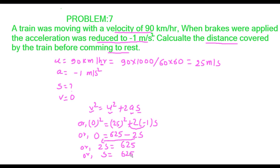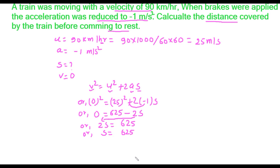When minus 2 comes to the other side it becomes plus 2s, then s = 625 divided by 2. When we solve it we get the value 312.5. The unit of distance is meters, so this is the required distance: 312.5 meters.